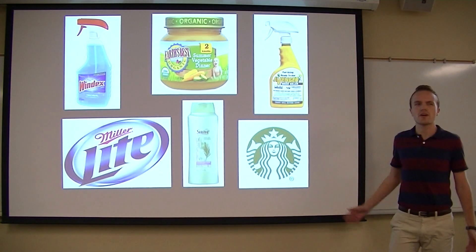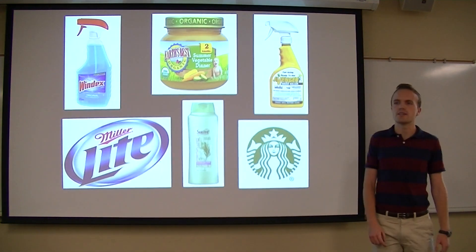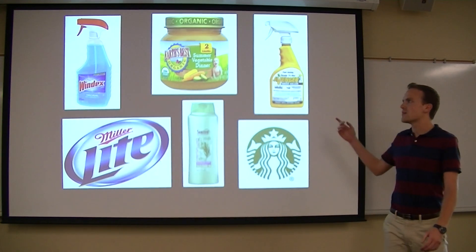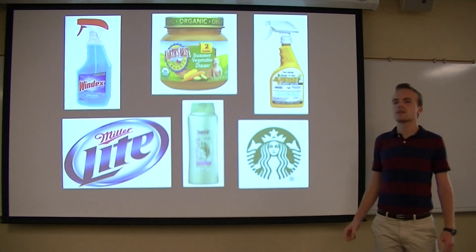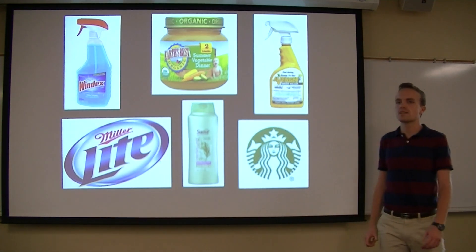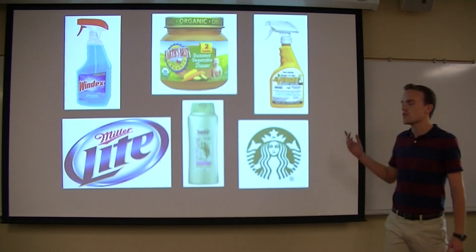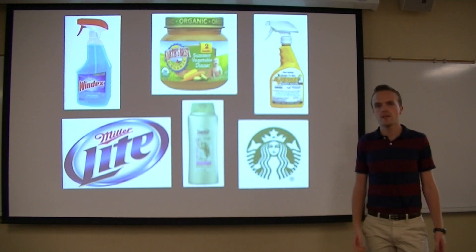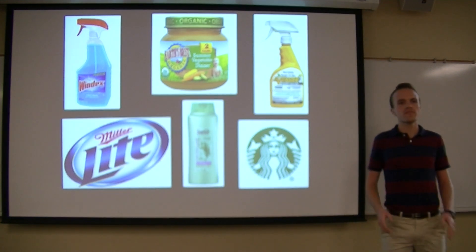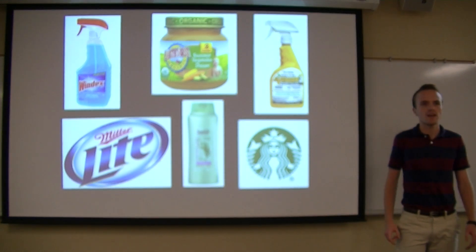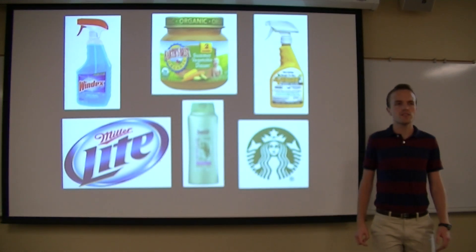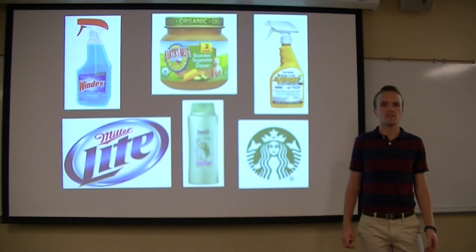What do these six products have in common? Baby food, beer, Windex, Starbucks coffee, weed killer. They all have varying amounts of a very dangerous and deadly chemical.